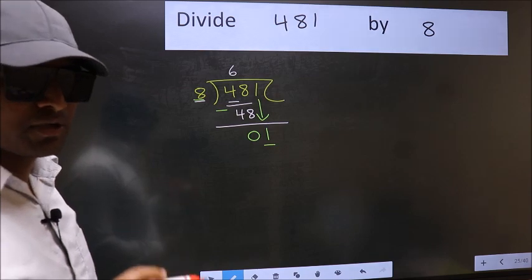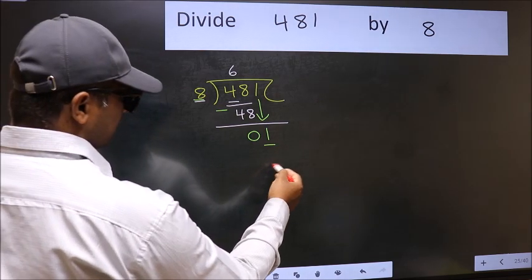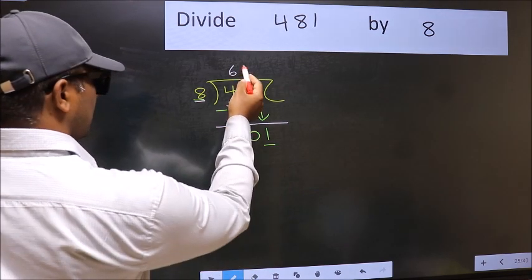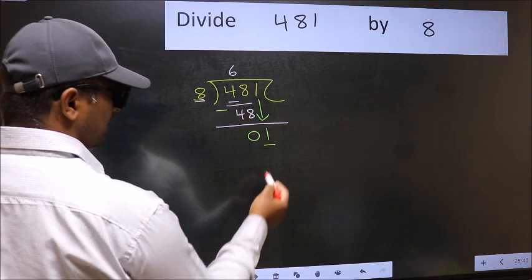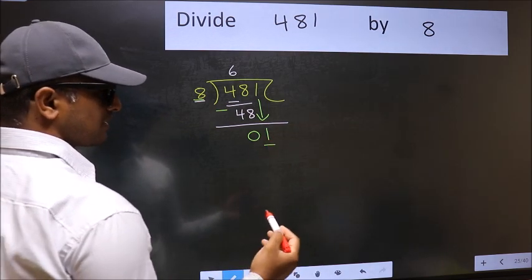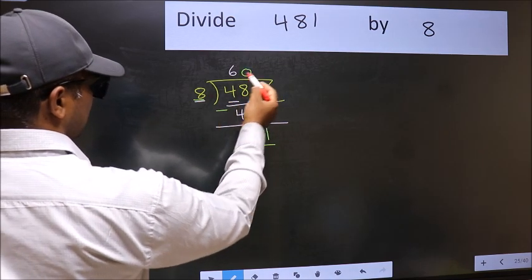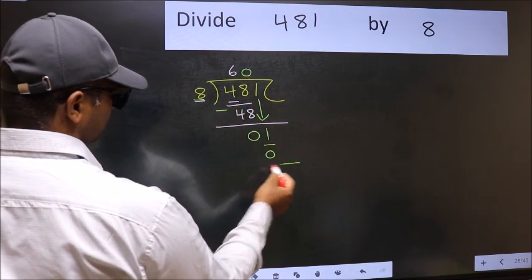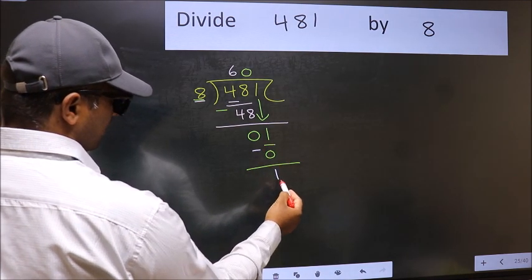Instead, what you should think of doing is, which number should we take here. If I take 1, we will get 8. But 8 is larger than 1. So what we should do is, we should take 0. So 8 into 0 is 0. Now we should subtract. 1 minus 0 is 1.